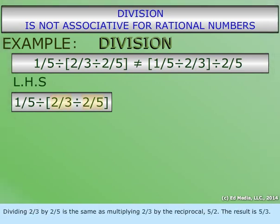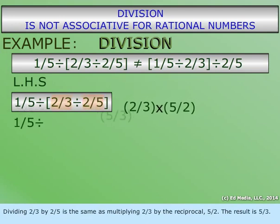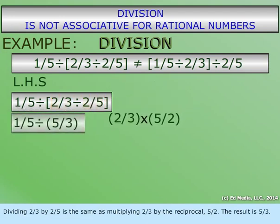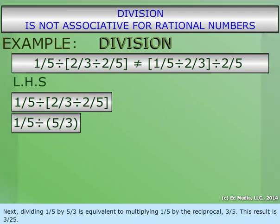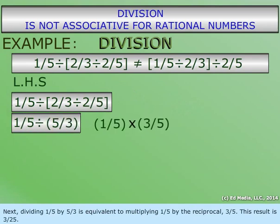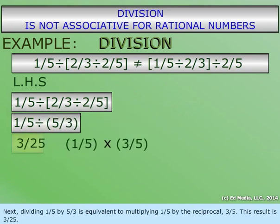Dividing two-thirds by two-fifths is the same as multiplying two-thirds by the reciprocal five-halves. The result is five-thirds. Next, dividing one-fifth by five-thirds is equivalent to multiplying one-fifth by the reciprocal three-fifths. This result is three divided by twenty-five.